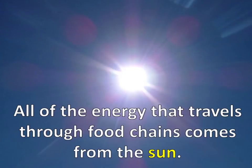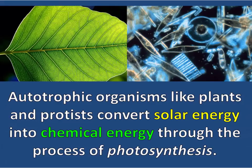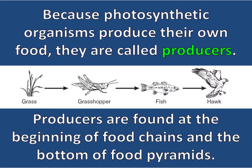All of the energy that travels through food chains comes from the Sun. Autotrophic organisms like plants and protists convert solar energy into chemical energy through the process of photosynthesis. Because photosynthetic organisms produce their own food, they are called producers. Producers are found at the beginning of food chains and at the bottom of food pyramids.